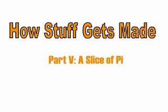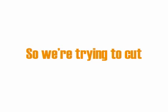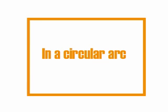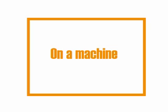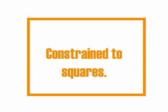Welcome to manufacturing math, lesson 1, part 5, in which we partake of a slice of pie. We're trying to cut a circular arc using a radial arm on a machine that's constrained to only square movements.